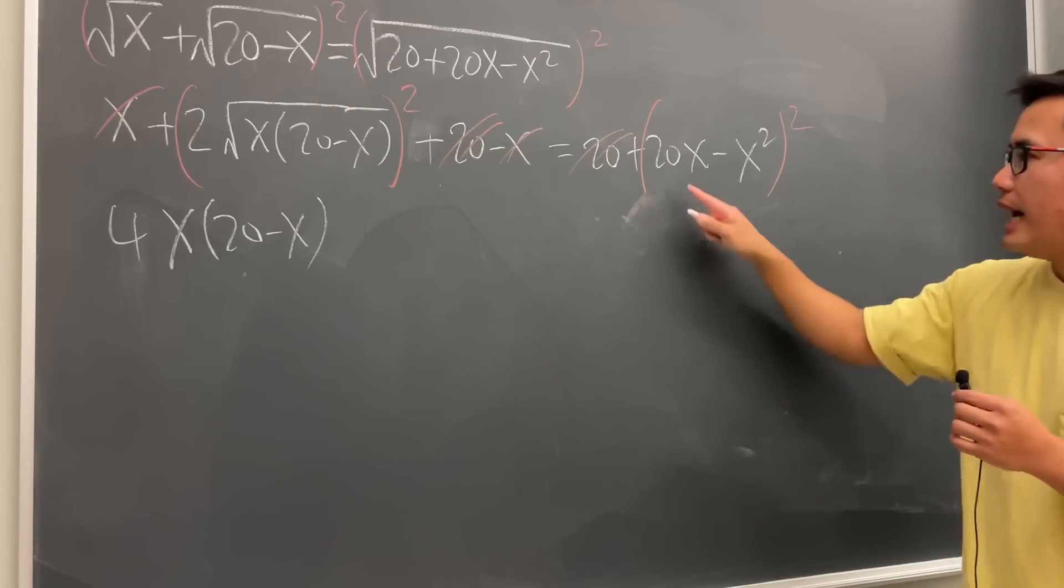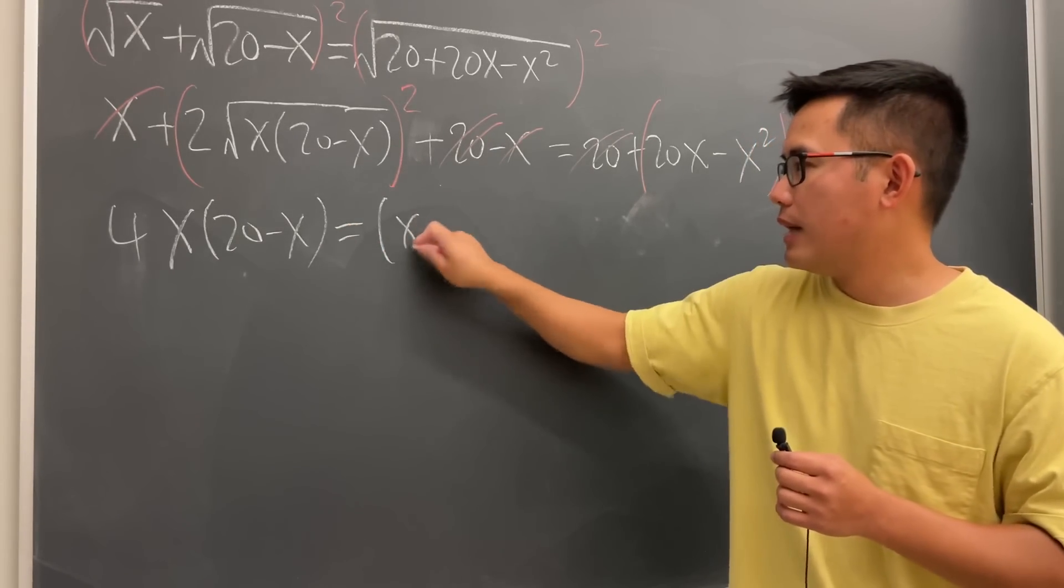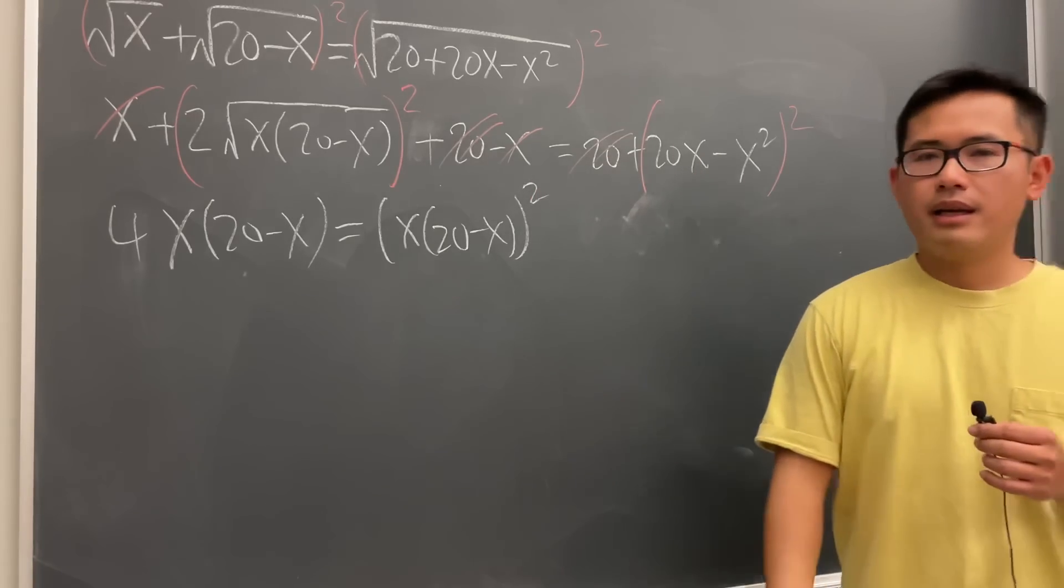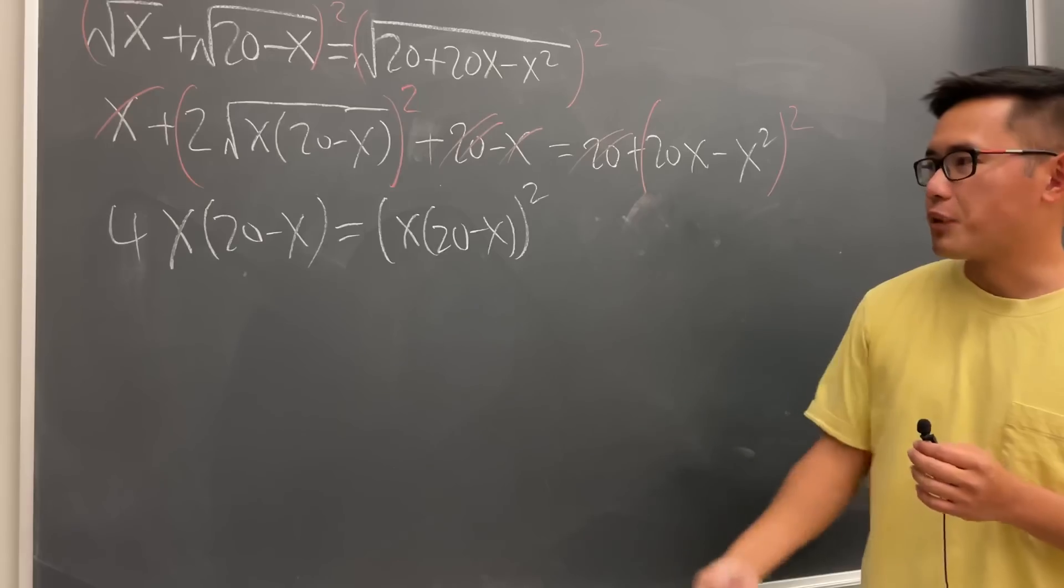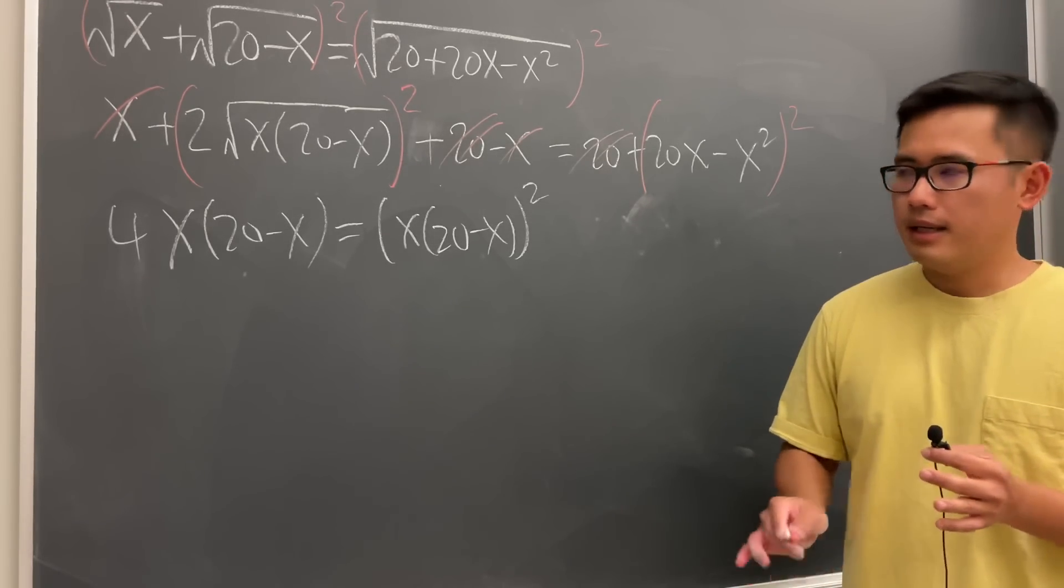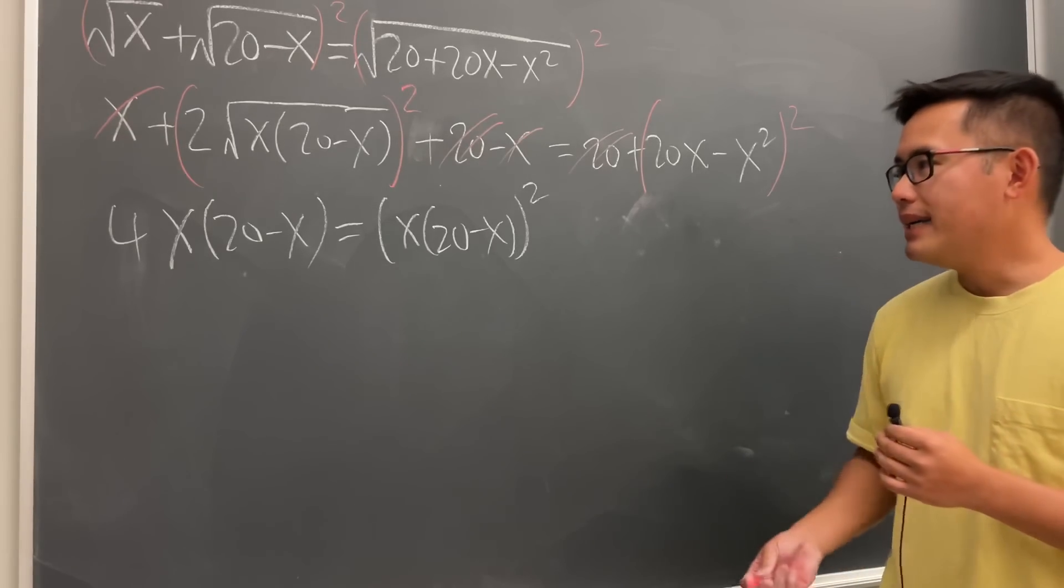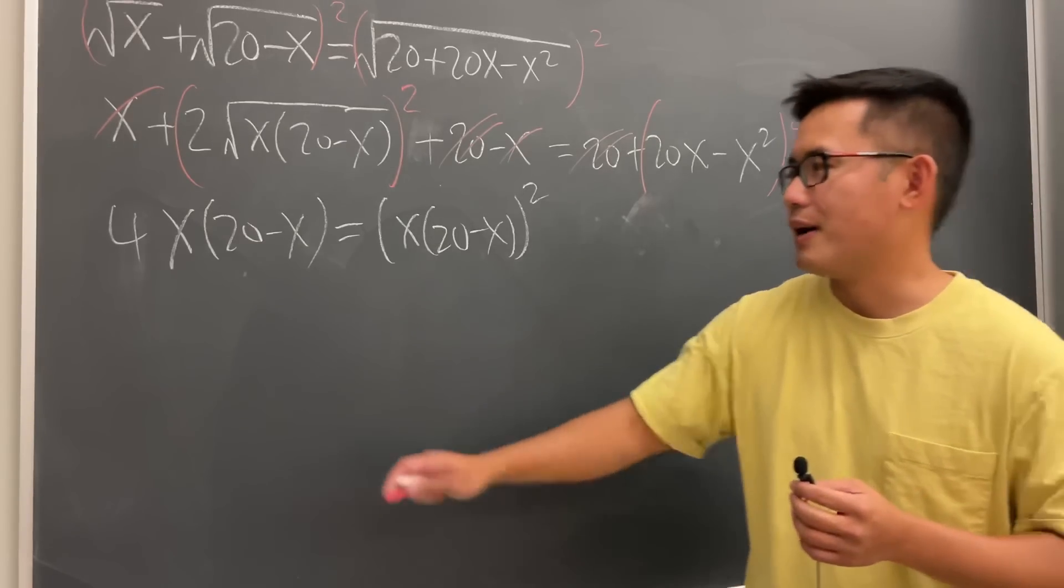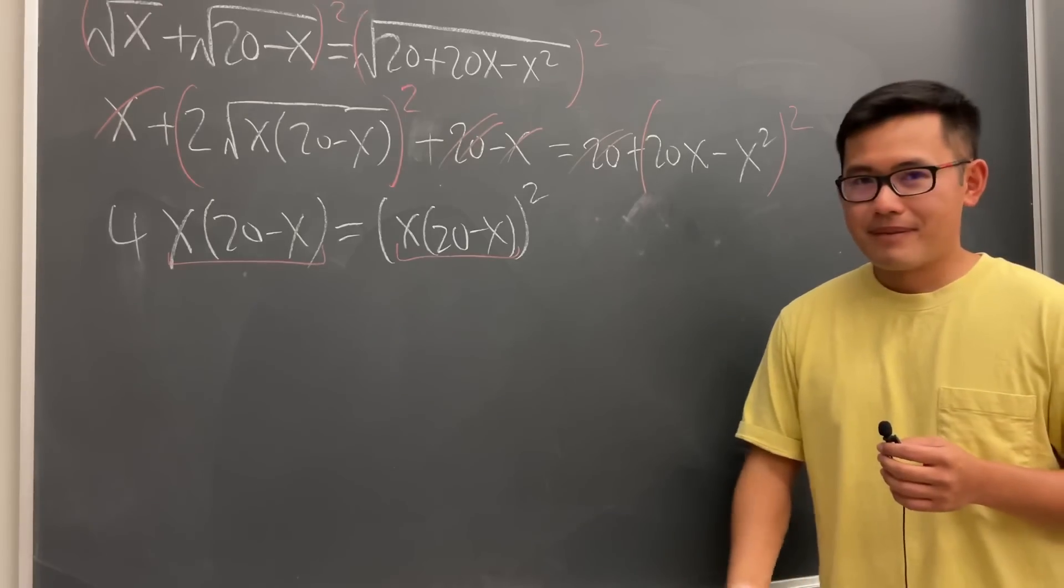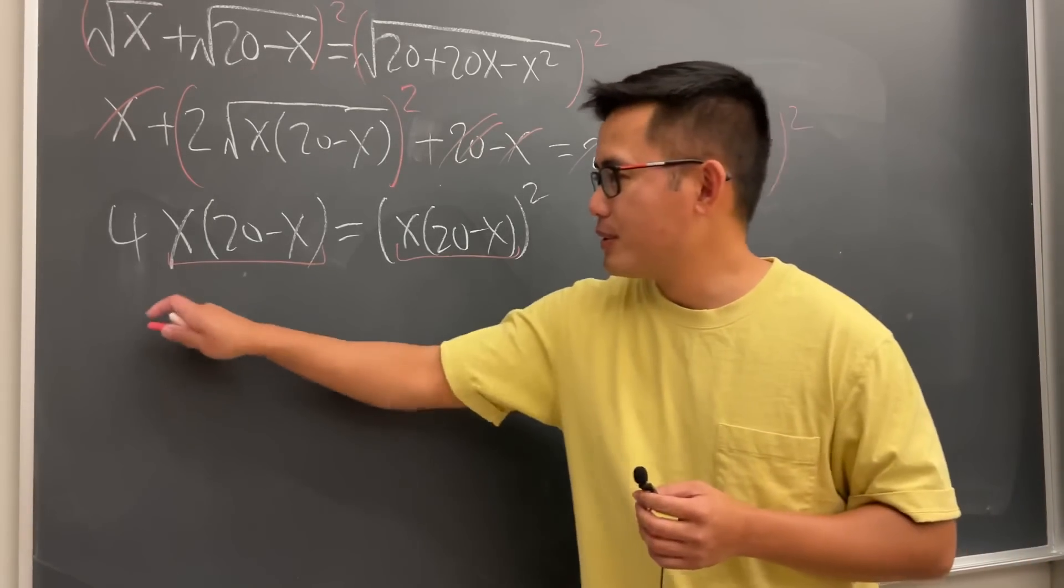On the right-hand side, notice that we can factor out an x. And then I'm not going to square it. I'm just going to write it down like this. And the reason I didn't want to square this is because if we square it, if we expand everything, it's going to be a lot of work. You just go ahead and check it out. But now if you look at this and that, we can actually just do a quick substitution.